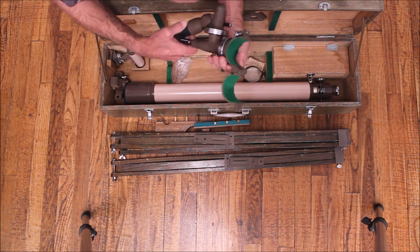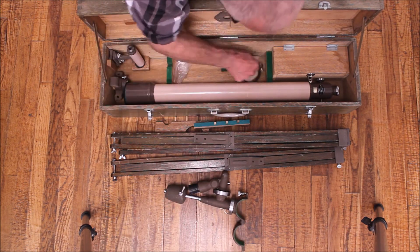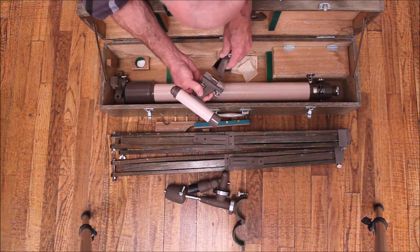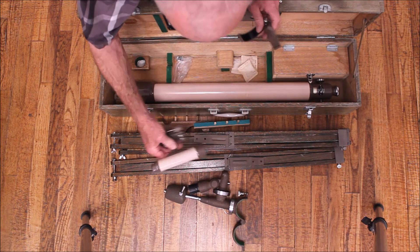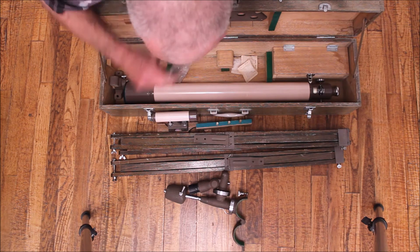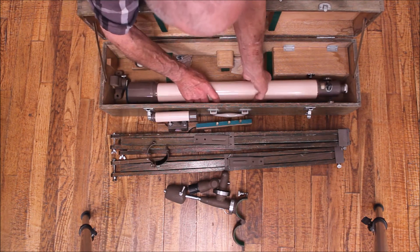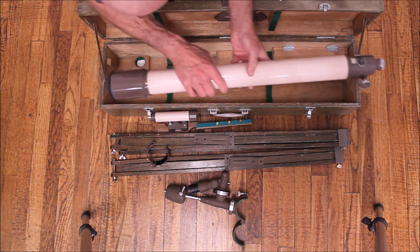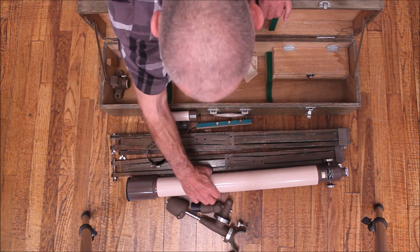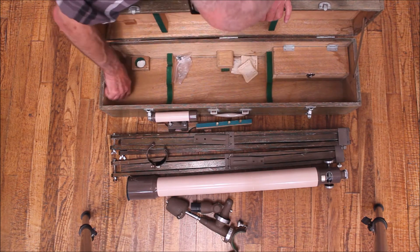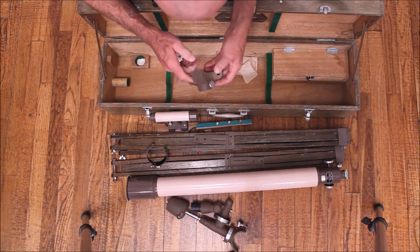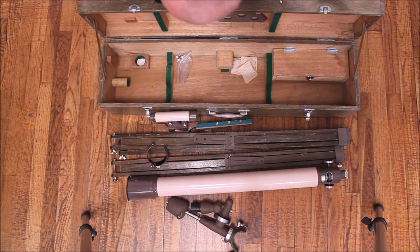Now we have the mount head. This is the clamp for the finder. It's going to go on there and go around the tube. This is the OTA. And last but not least is the tripod head. And some assorted nuts and bolts.